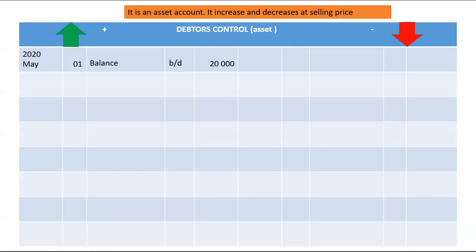Sales will be debited to debtors control because sales is the other account that is affected — which is an income account. Sales will be credited and debtors control will be debited. That is why under debtors control we write the account that was credited, which is sales. This will be the sales figure that we take as a total in the debtors journal.